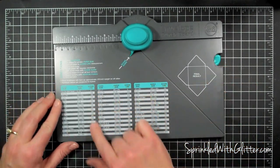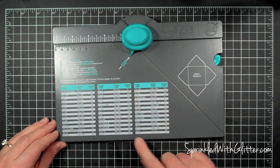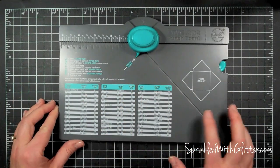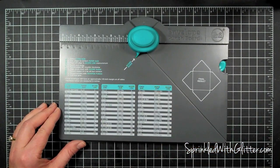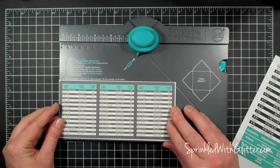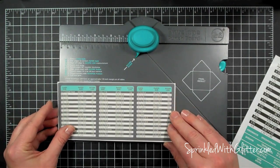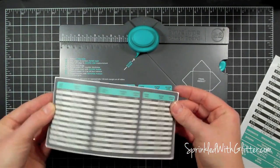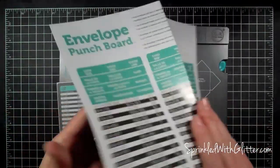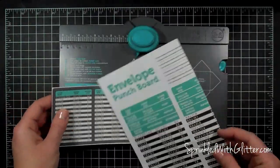But you can make several different sizes of envelopes all the way up to a six by eight and a half envelope, and all the measurements are right here on the punch board. I did also want to show you that it comes with a sticker for friends who are overseas who use the metric system. So it converts to the metric system, and then there are full size instructions and measurements here as well that come with the punch board.